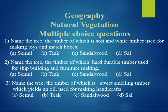The first question: name the tree the timber of which is soft and white, used for making toys and matchboxes. The correct answer is A, Semul. Second question: name the tree the timber of which is hard and durable, used for shipbuilding and furniture. The answer is B, teak. Third question: name the tree the timber of which is sweet-smelling and yields an oil used for making handicrafts. The answer is C, sandalwood.